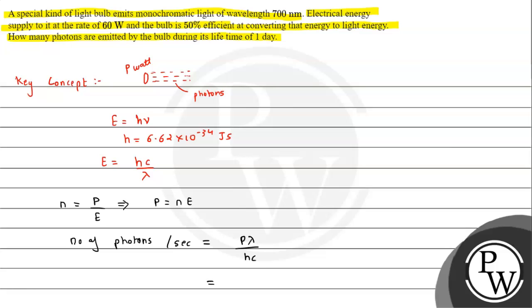Power given is 60 watts but it can convert 50%, its efficiency is 50%. In that situation we can say the actual energy converted to light energy will be 30 joules per second. It will be emitting 30 joules per second, so here we have to take power 30.